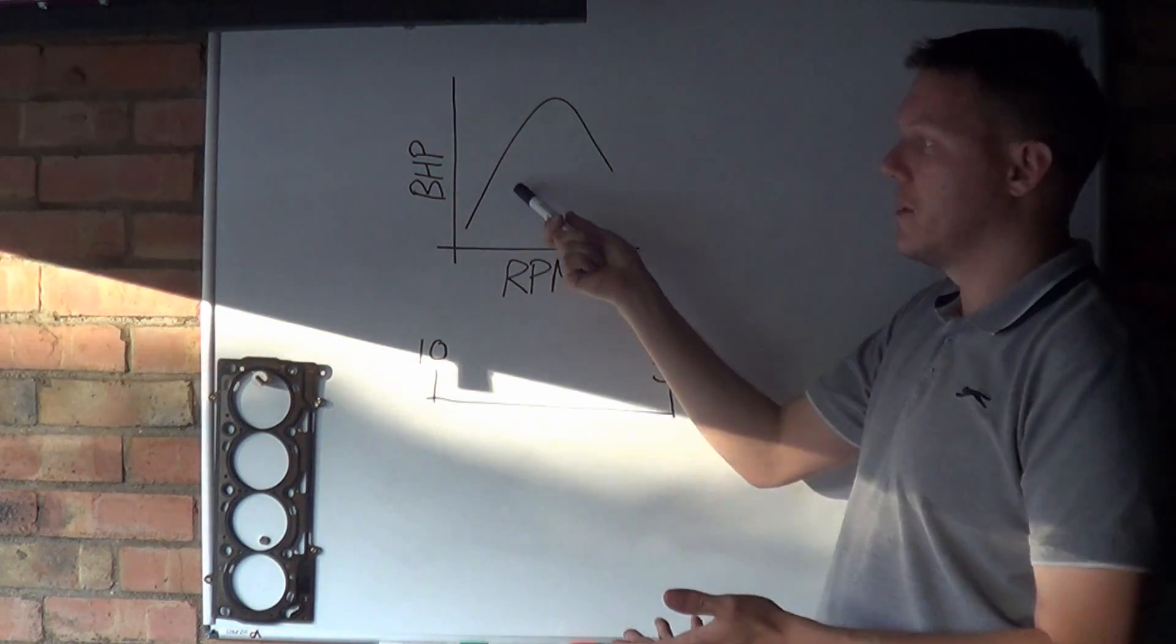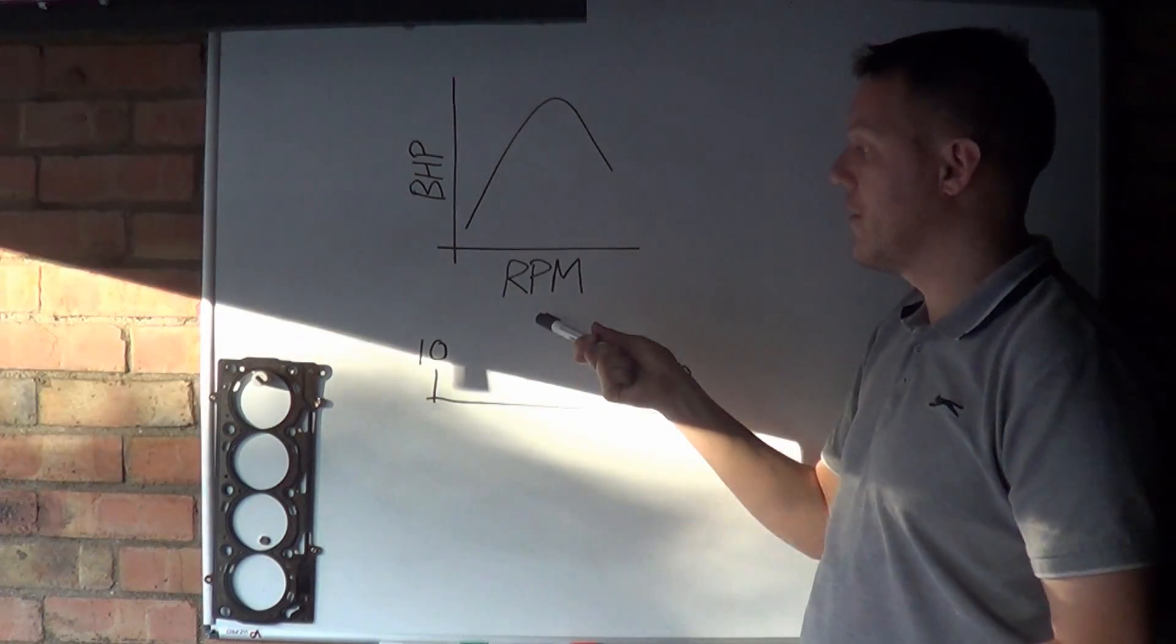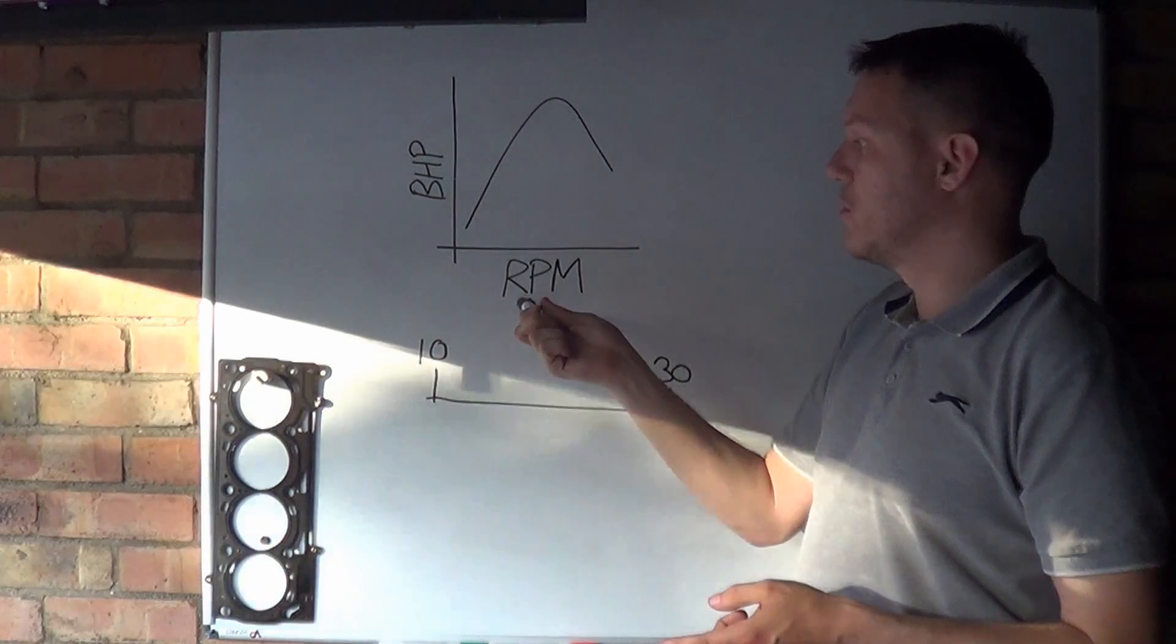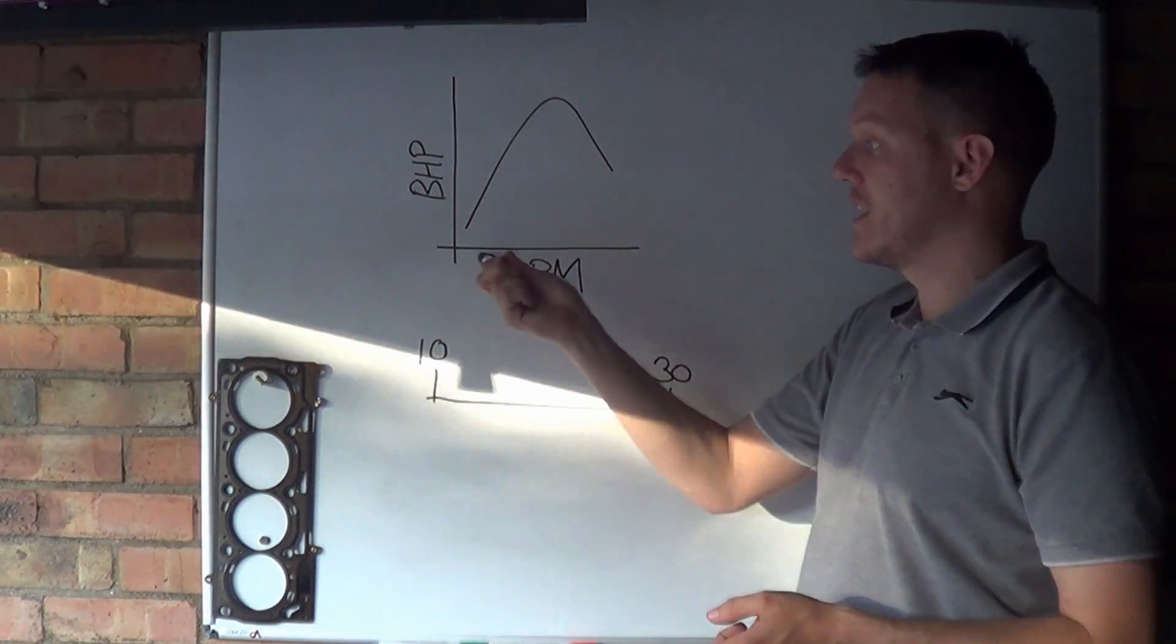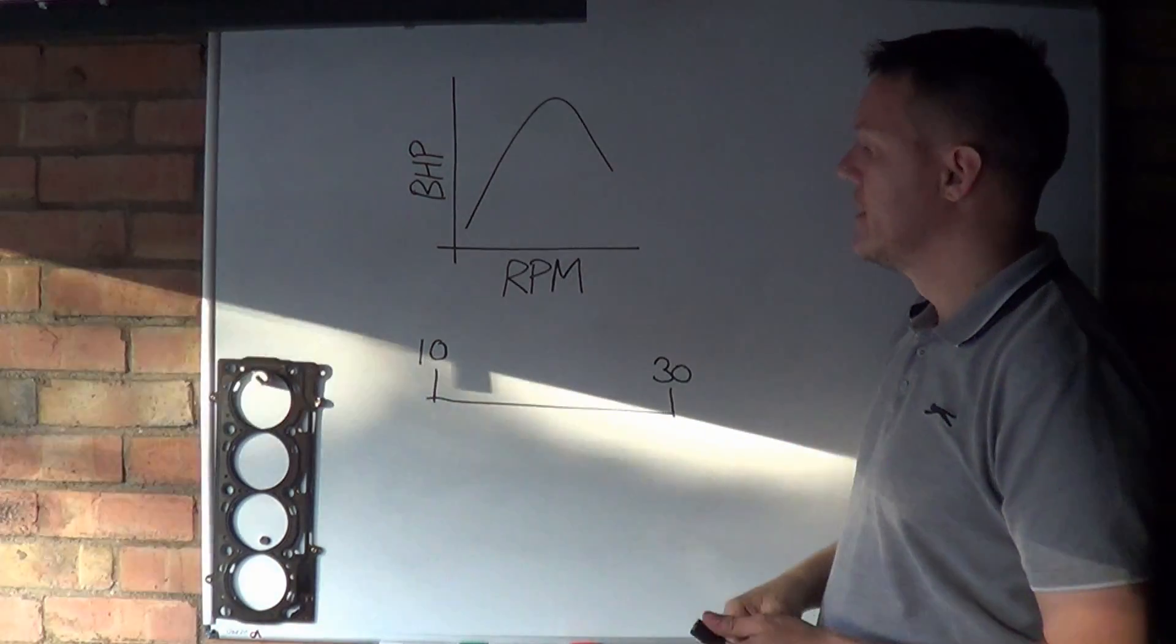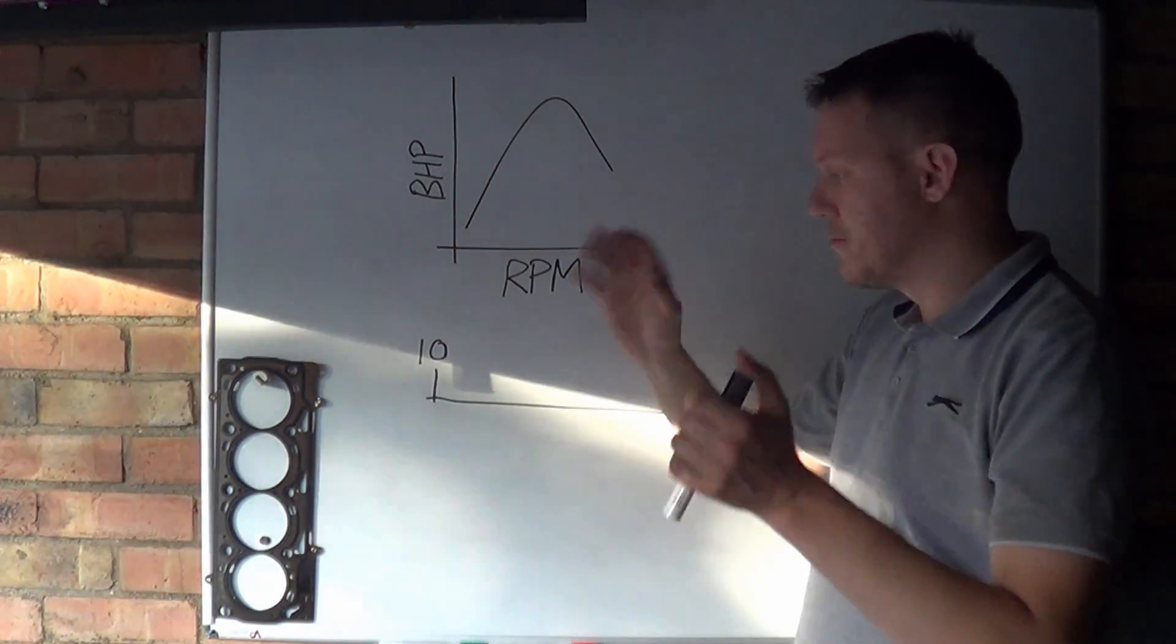Where we left off with the power band video is that we had a power band curve pretty much like this, which is your horsepower and RPM. Now it's not torque and RPM because we're using RPM here, which means that we have a function of time, so it's horsepower and not torque.